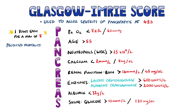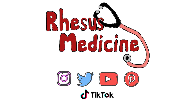A score of 0 to 2 has a mortality rate of around 2%. A score of 3 to 4 has a 15% mortality rate, and scores in this region or above will generally need admission to the ICU. A total of 5 or 6 carries a 40% mortality, while scores of 7 or 8 have a mortality rate up towards 100%.